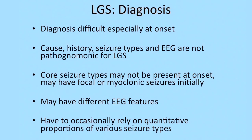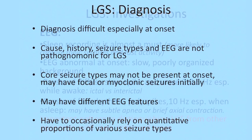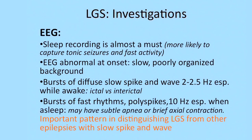In addition, the core seizure types may not be present at onset. You can have initially focal seizures, or the patient may present with myoclonic seizures which can complicate the picture. A sleep recording is almost essential — not just a sleep recording, but a video sleep recording.